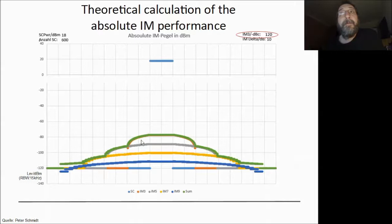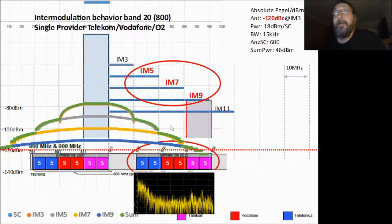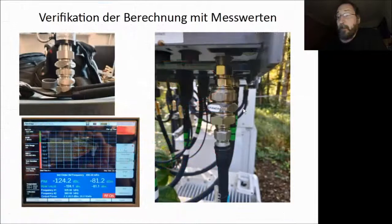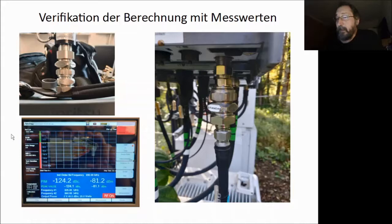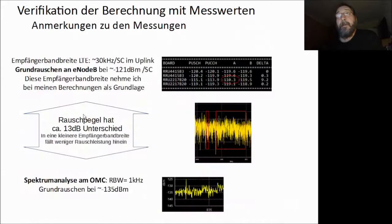I can overlay this picture on a frequency plan to see what possibly happens with an antenna with a certain PIM value. To check my calculations I used a PIM standard — a part used to calibrate PIM measurement devices — connected to a base station. First I measured it: the PIM standard has minus 124 dBc or minus 81 dBm using two test tones at two times 20 watts (43 dBm). I tried to compare it with my BTS, which has a possibility to do spectrum analysis.